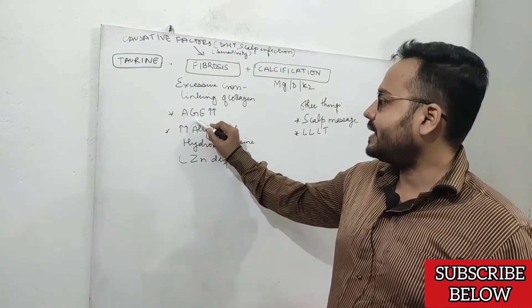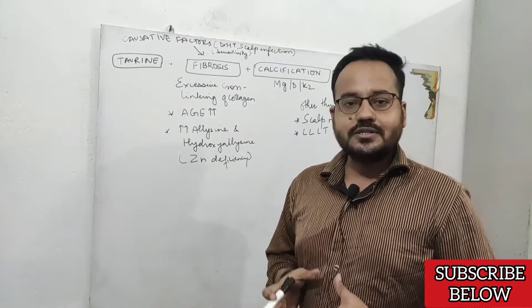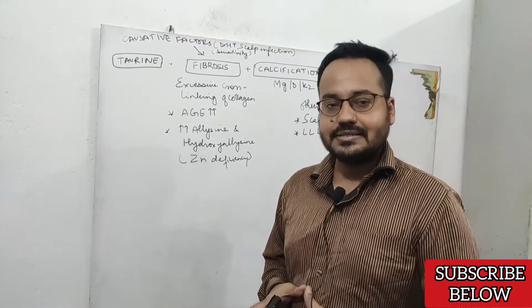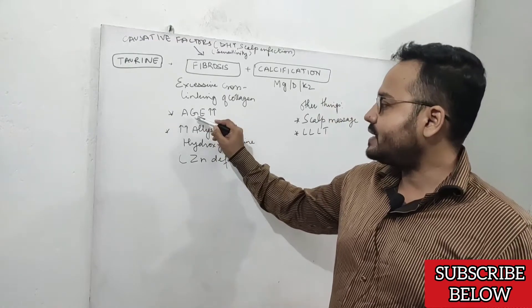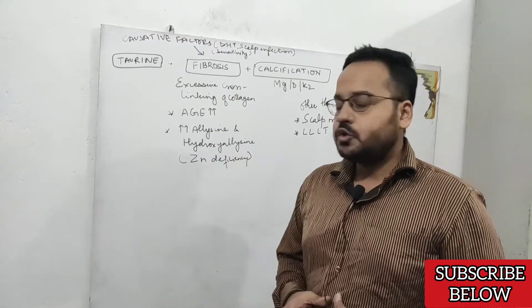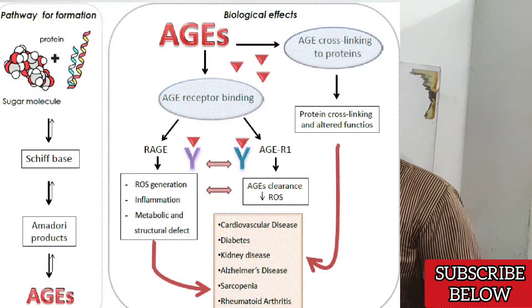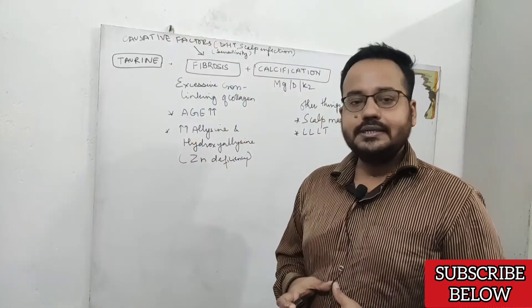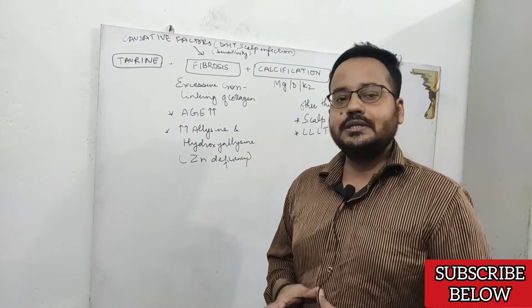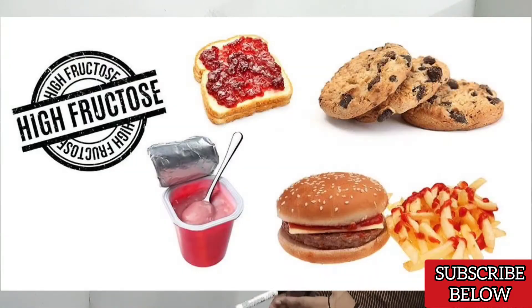One of the important causes of scalp fibrosis is advanced glycation end products. If you have insulin resistance, there is increased chance of having increased advanced glycation end products, so you must improve your lifestyle, improve your insulin sensitivity, and not eat junk foods.